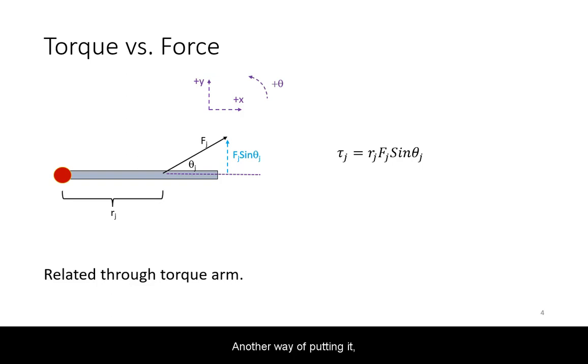Another way of putting it, only the component of the force tangential to the rotation produces torque. This tangential component will produce work as it acts along the arc path.